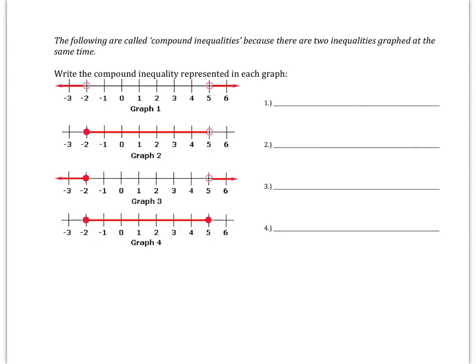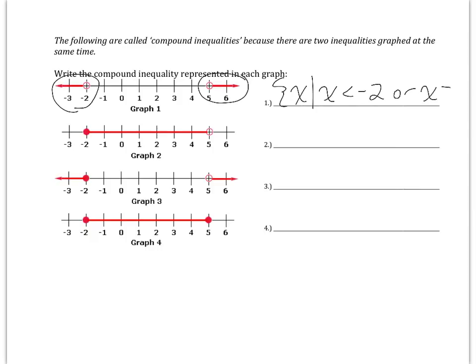Now let's look at the next four, which are called compound inequalities because two things are going on at once. The first one: you've got x less than negative two and x greater than five — the shading goes in opposite directions, away from each other. As a domain: x such that x is less than negative two or x is greater than five. This covers all x values except the section in the middle.